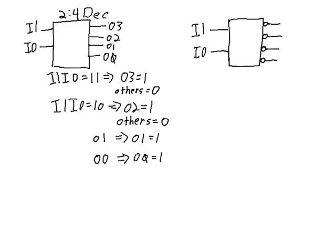I could have taken this active high decoder and put inverters, or NOT gates, on O3, O2, O1, and O0, and made those all active low. I've got my four outputs there.